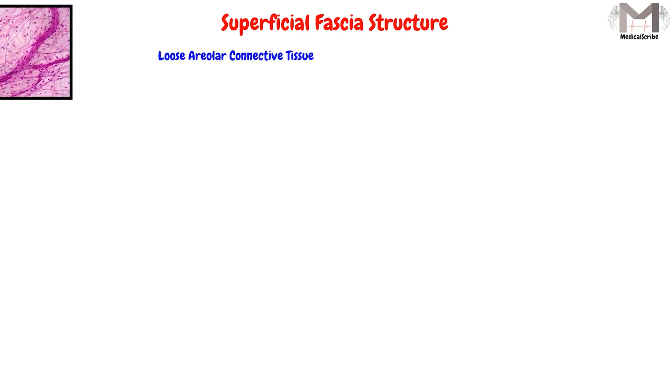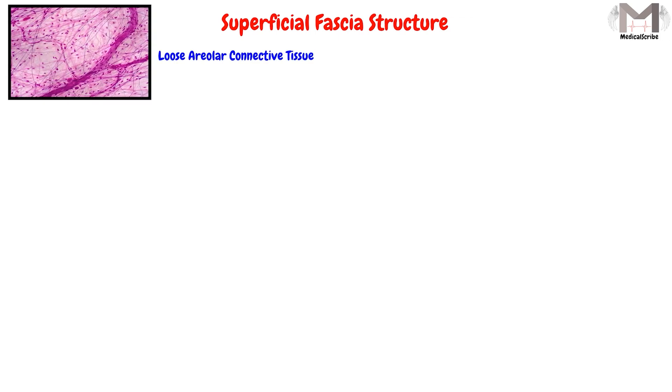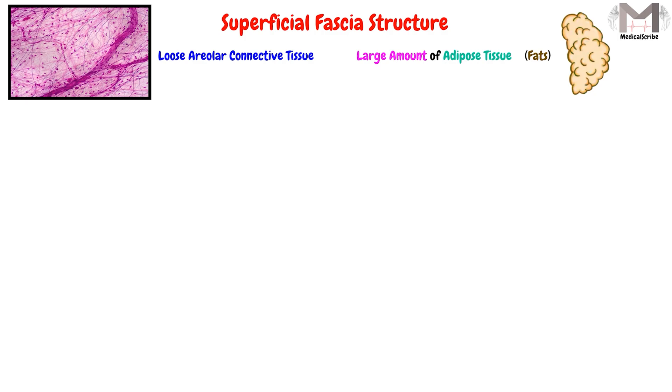Now we will explain a very important topic: the structure of the superficial fascia. This superficial fascia is mostly composed of loose irregular connective tissue, and it contains a large amount of adipose tissue, or fats. In addition to those two major components — connective tissue and adipose tissue — we can find many other structures.